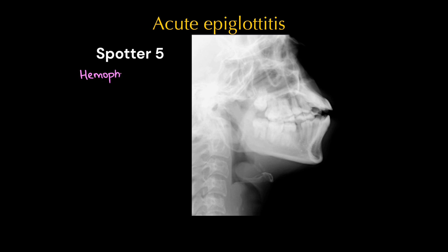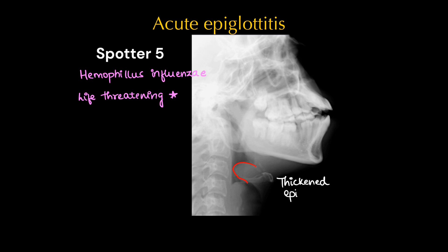This is a neat PG spotter case of acute epiglottitis. The most common cause is Haemophilus influenzae. It's a life-threatening condition and better to diagnose on X-ray. Here we can see a thickened epiglottis and aryepiglottic fold giving rise to the thumb sign.